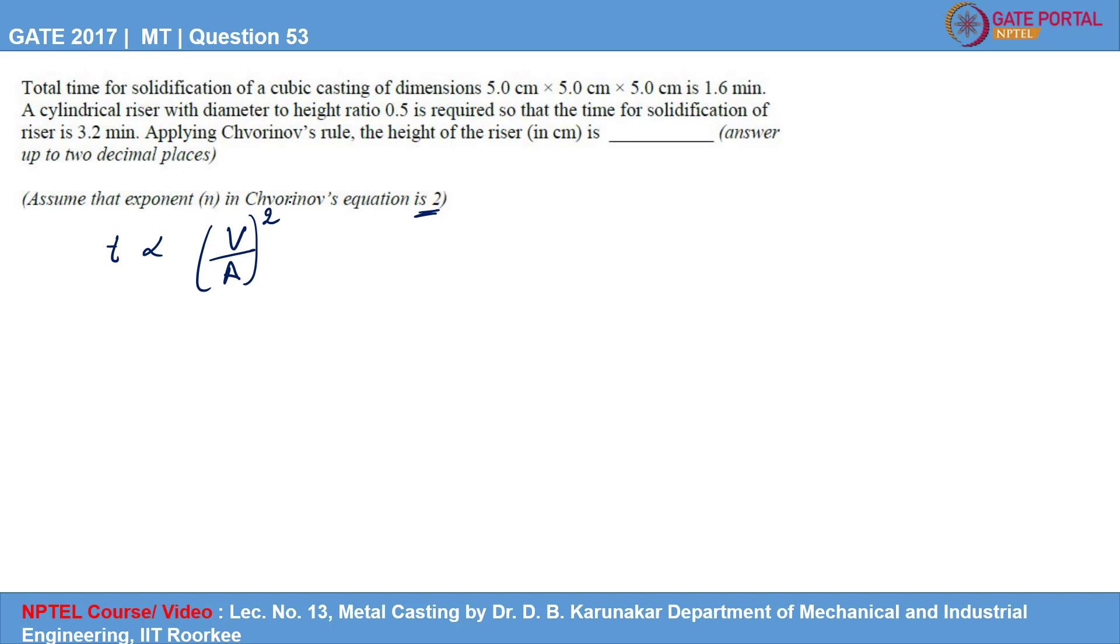So there are two solidifications happening: one in the cubic casting and one in the cylindrical riser. The solidification time is given to be 1.6 minutes. To replace the proportionality, I will introduce one constant K. Volume, since it is cubic casting, so volume will be 5 x 5 x 5. Upon total surface area, total surface area is nothing but 6 x 5 square, because there are 6 surfaces and each surface is having a surface area of 25 cm square. So it is to power 2.